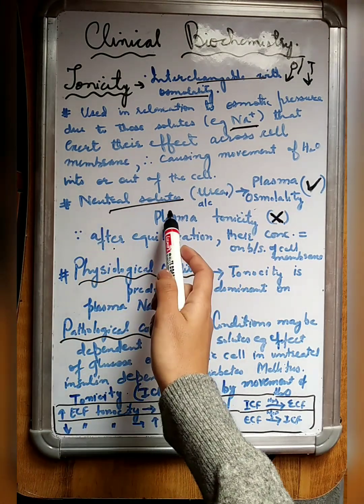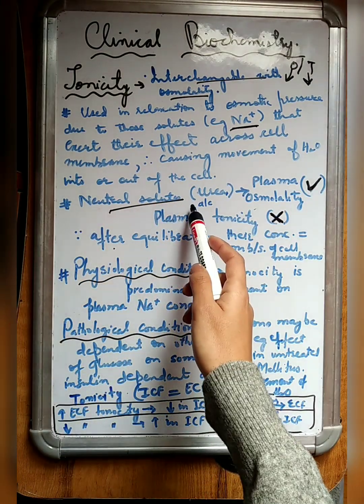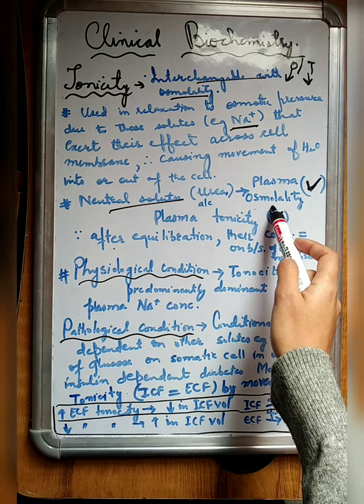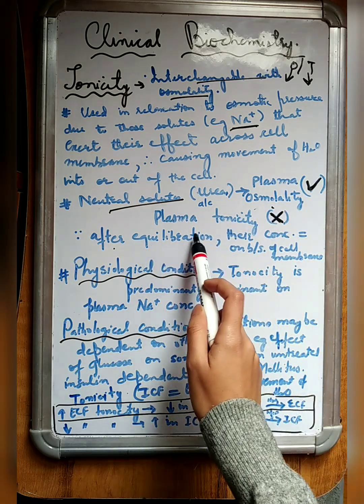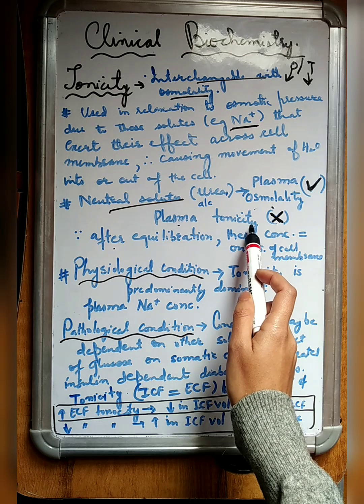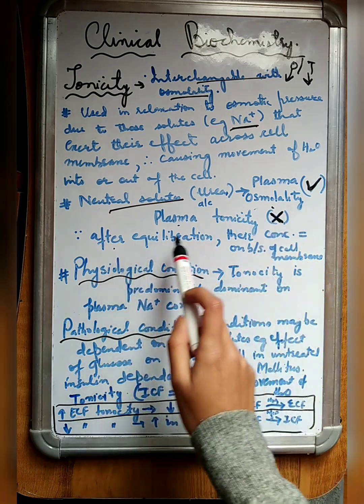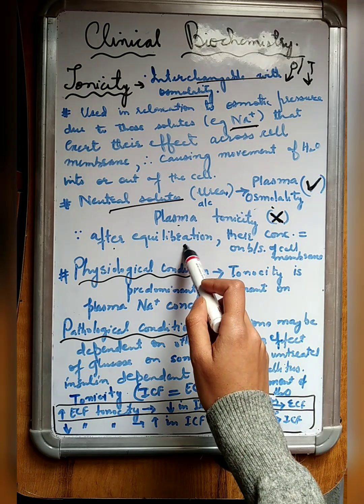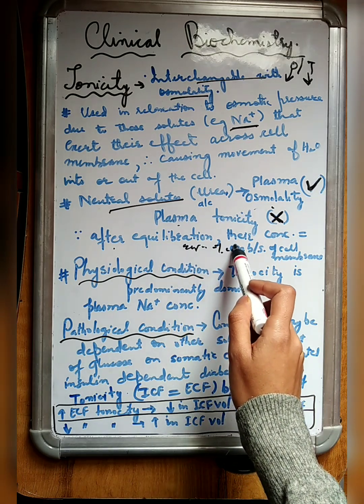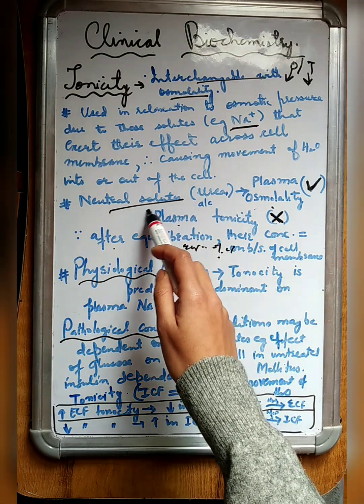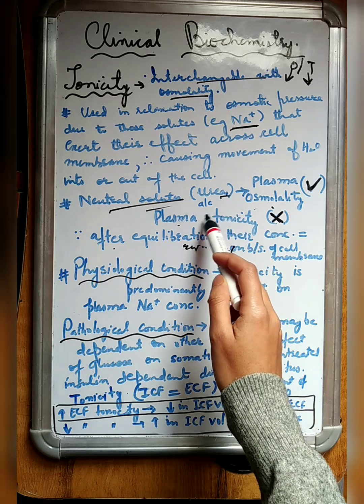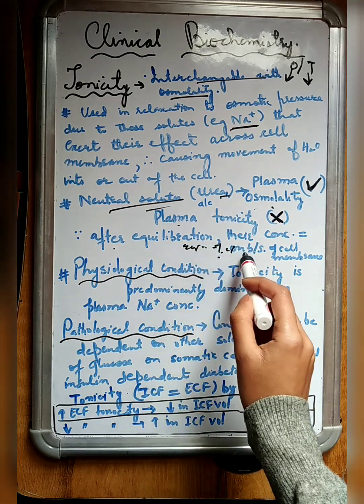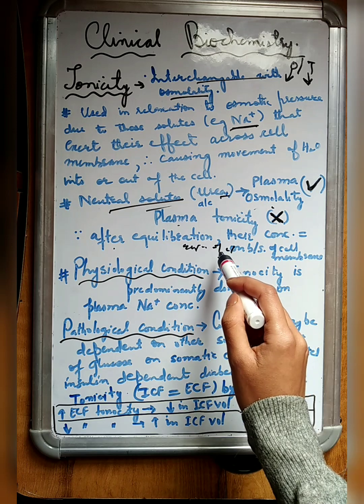Now regarding neutral solutes, they are responsible for plasma osmolality but not for plasma tonicity. Since after equilibration, their concentration remains the same on both sides, in the ECF and the ICF. The concentration of neutral solutes like urea or ethanol will remain the same on both sides.